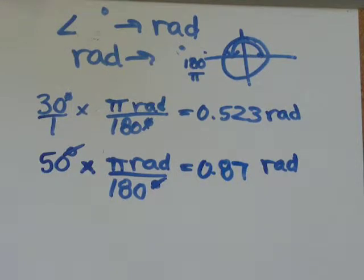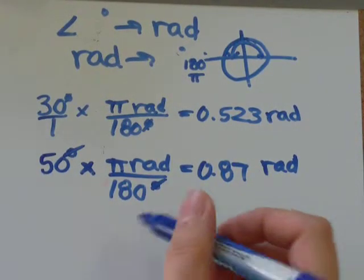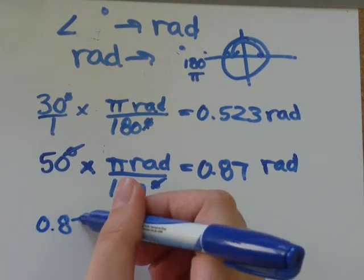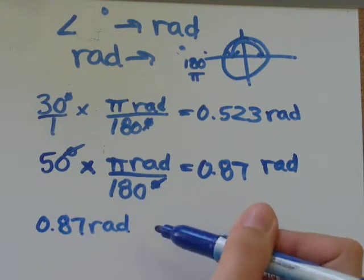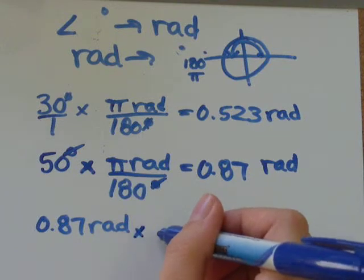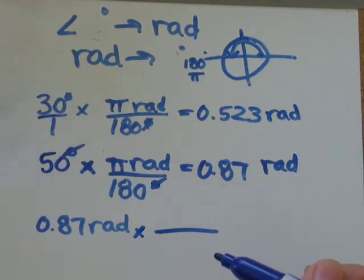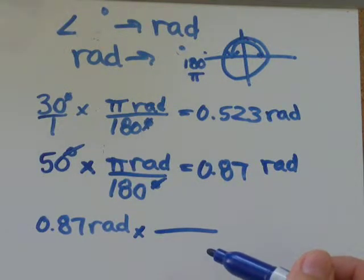So let's talk about if we were going the other way—taking something in radians and converting it to degrees. So let's use this one: 0.87 radians is how many degrees. I'm going to multiply by the same conversion factor, right? Pi radians is the same as 180 degrees.